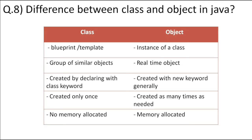What is the difference between class and object in Java? A class is a blueprint or template and an object is an instance of the class. For example, if you have a Student class, you define parameters like ID and name and the behaviors of the student. You can create multiple objects of this class for different students — one for student Gita, another for Sita, and so on. Class is a group of similar objects; objects are real-world entities. Objects are created using the new keyword; class is declared with the class keyword. A class is declared once but multiple objects can be created. Memory for objects is allocated in the heap area; for the class itself, no memory is allocated.